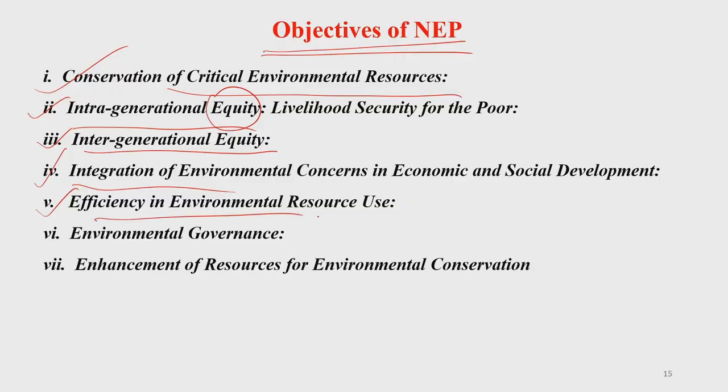Efficiency in environmental resource use is another important objective of the National Environment Policy. We must utilize resources such as coal or gas in a manner that we get maximum benefit with limited use — that means enhancing the efficiency of a particular resource. For that, we need better technology, better engineering, and better management systems.